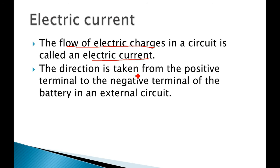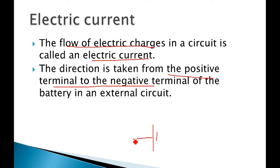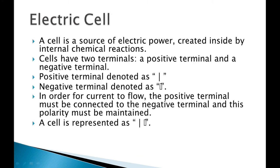The direction of current is always taken from the positive terminal to the negative terminal. Suppose this is your positive terminal and this is your negative terminal — current will flow from positive and end at the negative terminal. This is in the external circuit of the battery.